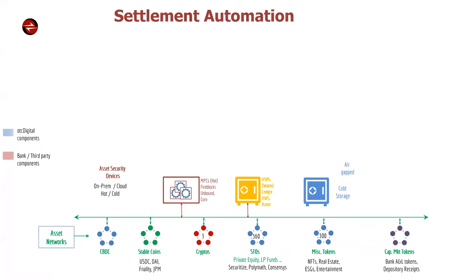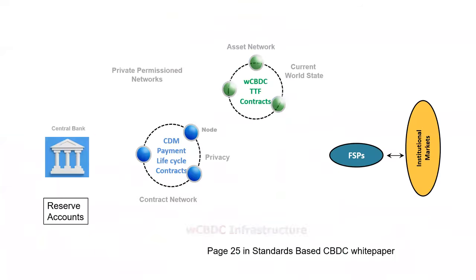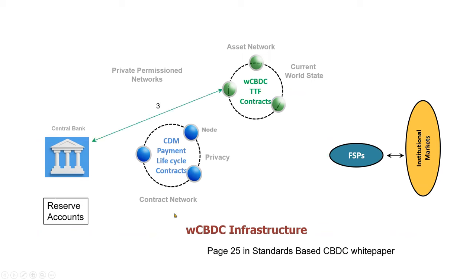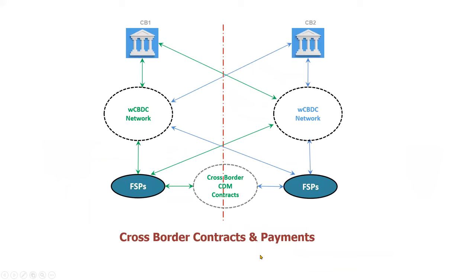I'm going to skip this slide — maybe we'll come back if there's time because it covers more complex things about settlement and settlement lifecycle. This is an example of an earlier white paper that Vipin and I worked on last year, showing how we can bring in automation using data standards and blockchains. The paper is available on the capital markets site. It shows how this can be automated between parties — not only between a single central bank, but also bringing in cross-border contracts and payments. A lot of effort has been going on between banks, and BIS has been spearheading a lot of the effort on cross-border implementations.